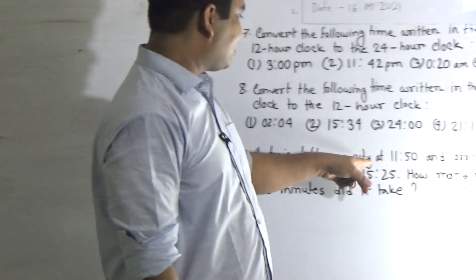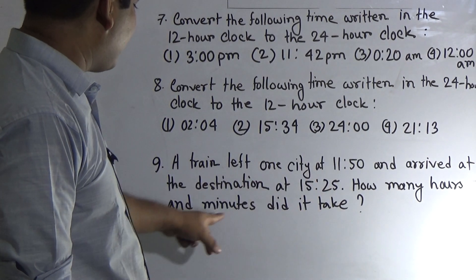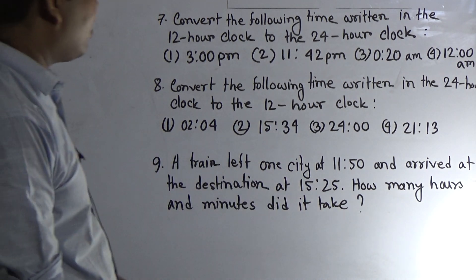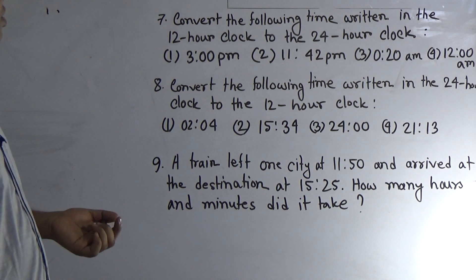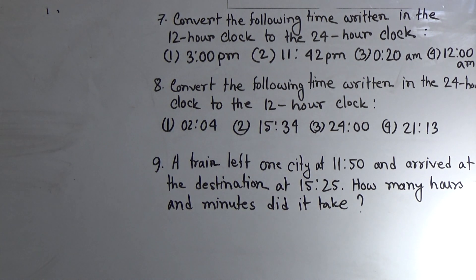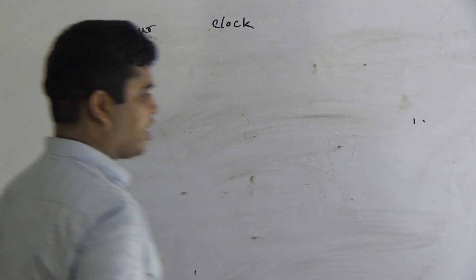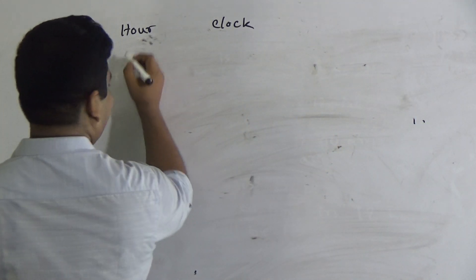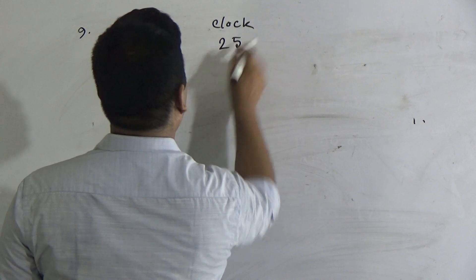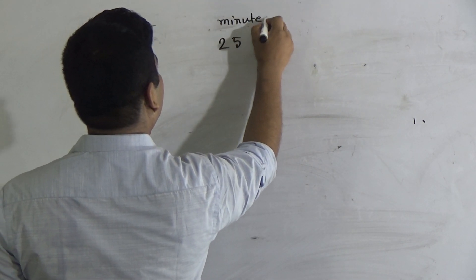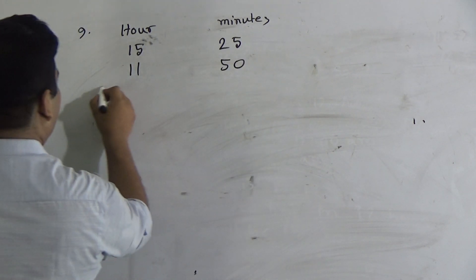Question 9: A train left one city at 11:50 and arrived at the destination at 15:25. How many hours and minutes did it take? The time is given in the 24-hour clock. The destination time 15:25 is greater, so we write 15 hours 25 minutes on top, and the departure time 11 hours 50 minutes below, and we do subtraction.